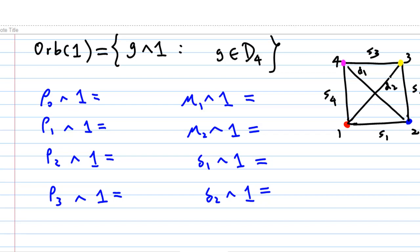Let's compute the orbit of 1. The orbit of 1 consists of all g·1 for all g belonging to D4. Rho0·1 = 1, since rho0 is the identity element. Rho1·1 = 2, since rho1 is rotation 90° anticlockwise, so vertex 1 moves to 2. Rho2·1 = 3, since rho2 is rotation 180° anticlockwise, so vertex 1 moves to 3. Rho3·1 = 4, since rho3 is rotation 270° anticlockwise, so vertex 1 moves to 4.